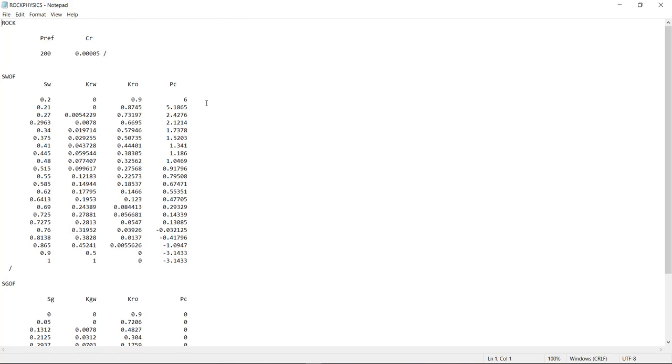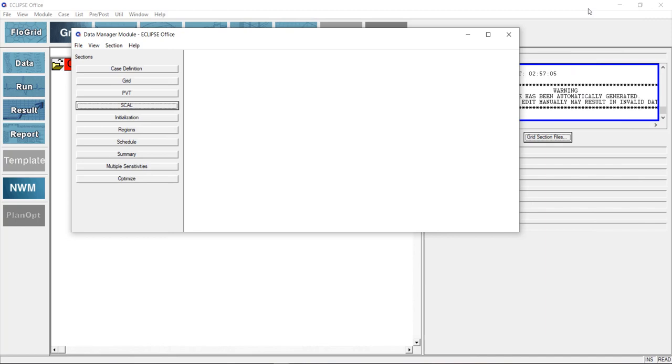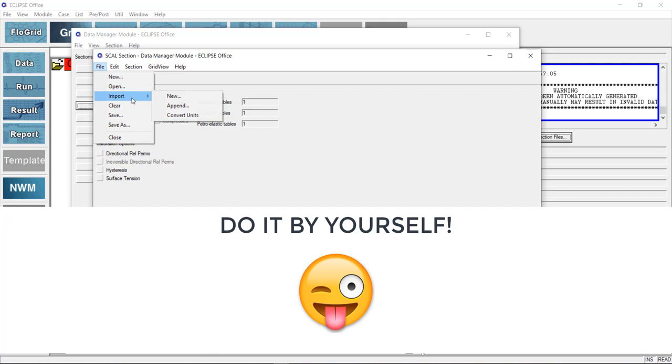By now you know how to import include files into your simulation model, right? So all you need to do right now is to open the scale section data manager, then go on to import this include file into your simulation project. I am not going to do that now.